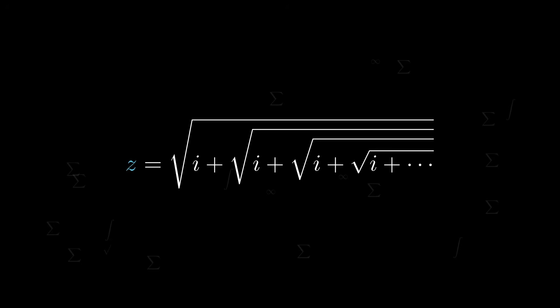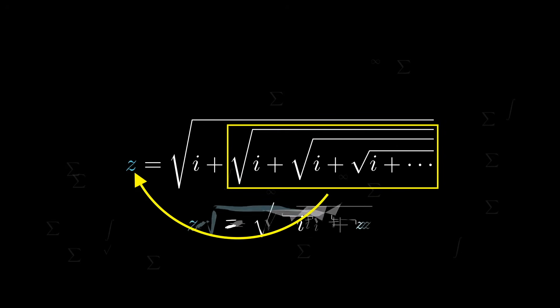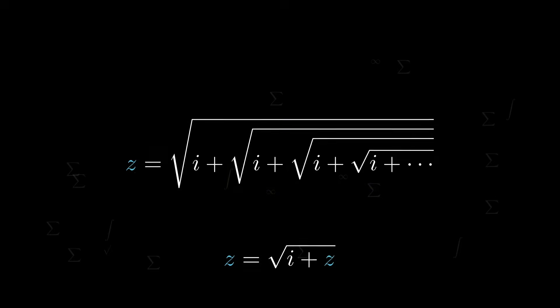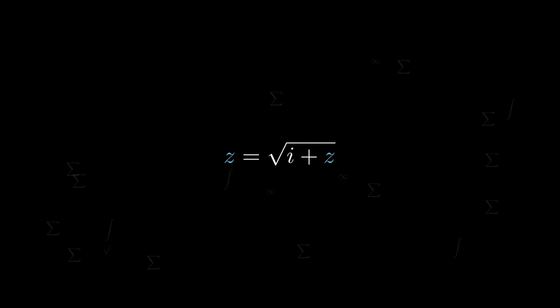Since this keeps going forever, with the whole thing equaling z, you might notice that the inside is also z. Thus, we can rewrite this as a much simpler expression: z equals square root of i plus z.